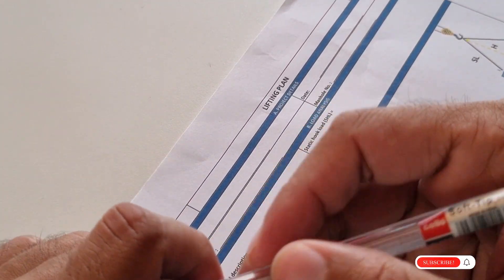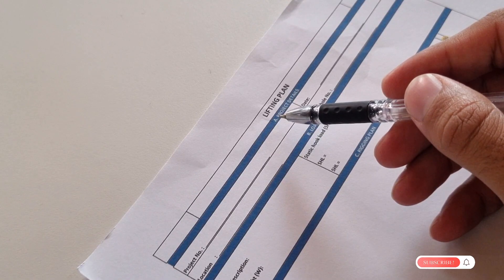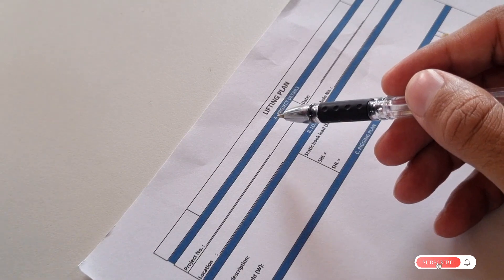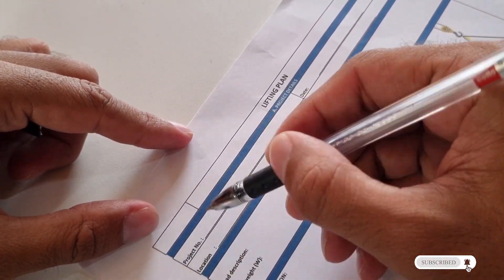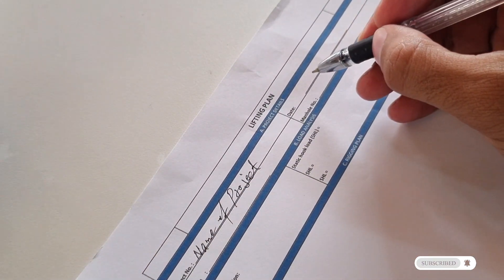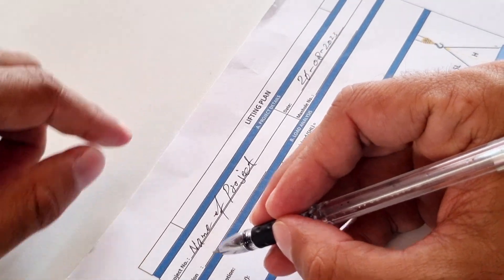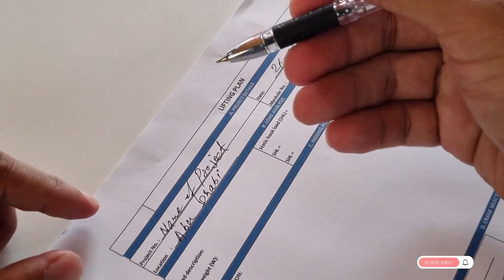In each lifting plan we have totally six things to identify. Number one is your project detail, your project name, date, and then your location. The location may be your project location as well, so you have to write this one.